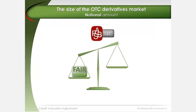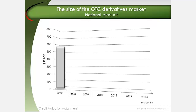When FAS 157 was introduced, the size of the over-the-counter derivatives market in terms of notional amount or face value was approximately $586 trillion. Almost two-thirds of this amount was comprised of interest rate derivative contracts, with the rest comprised of equity, FX, commodity, and other types of derivatives.